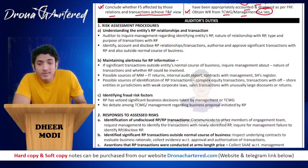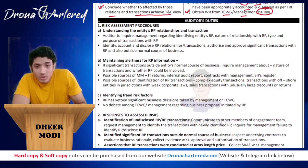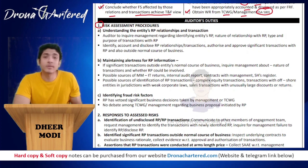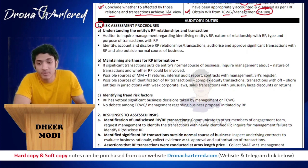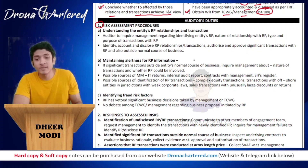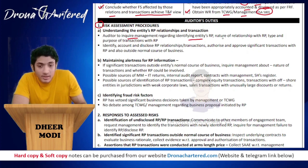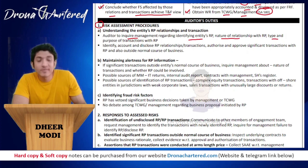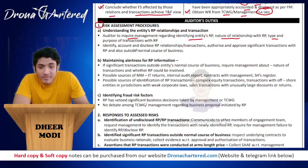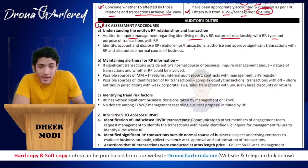Now, what are the auditor's duties? First, perform the risk assessment procedure (RAP): understand the entity's related party relationships and transactions. To do this, inquire management regarding identifying the entity's related parties, the nature of the relationships, and the type and purpose of transactions with the related party. Also identify, account for, and disclose related party relationships as well as transactions.